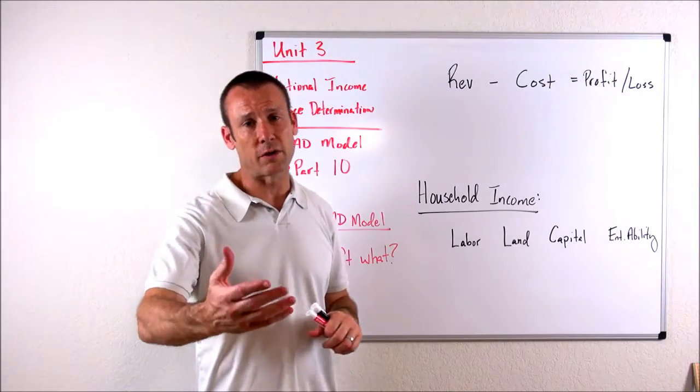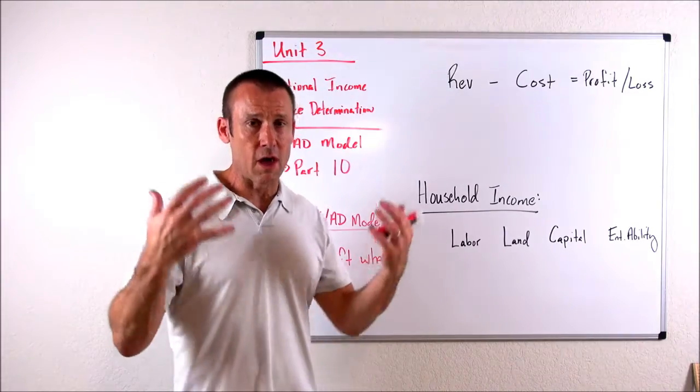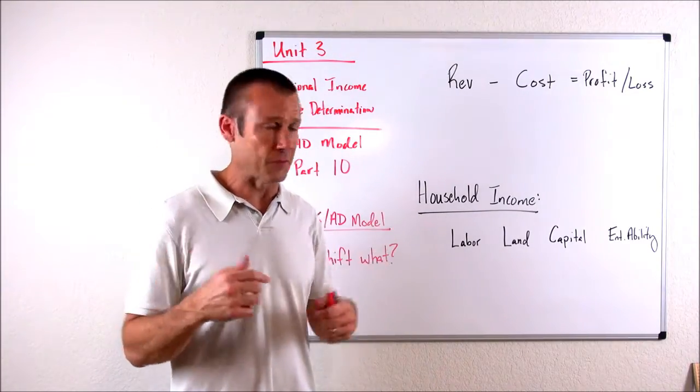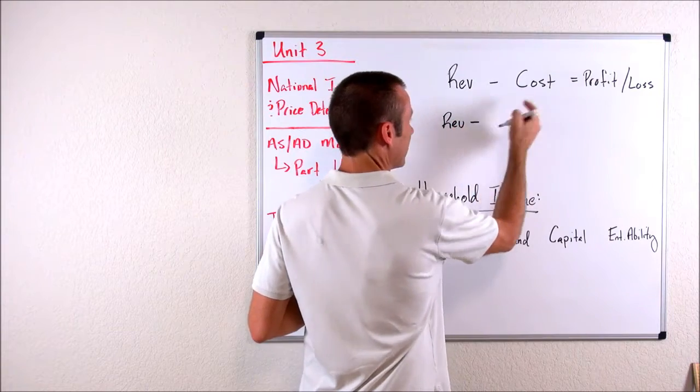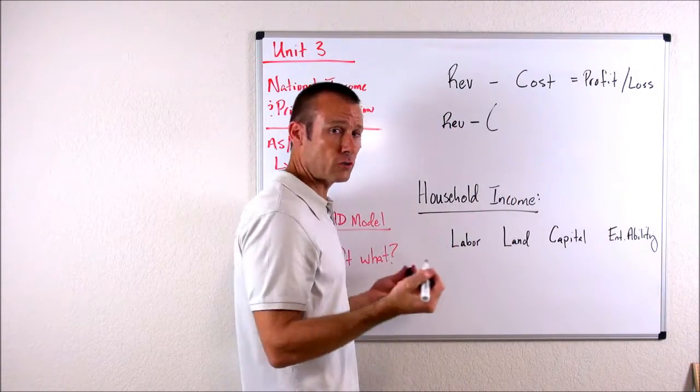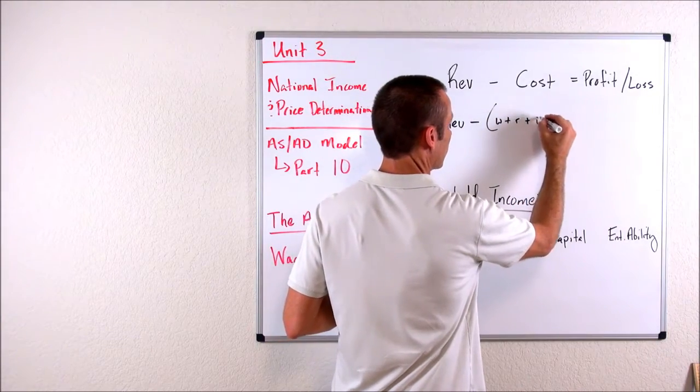So we have a problem in which wages go down. How should we think about that? Well, we've got revenue minus - what are costs? Costs to a business are wages plus rent plus interest.